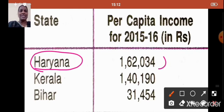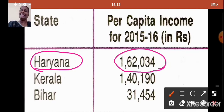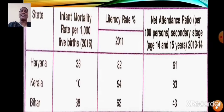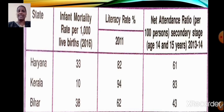Haryana's per capita income for the year 2015-16 was 1,62,034. Now let us compare these three states again on the basis of some other criteria — other criteria like infant mortality rate, literacy rate and net attendance ratio.